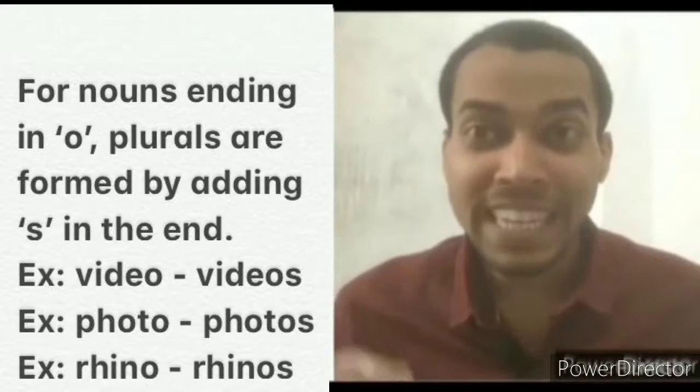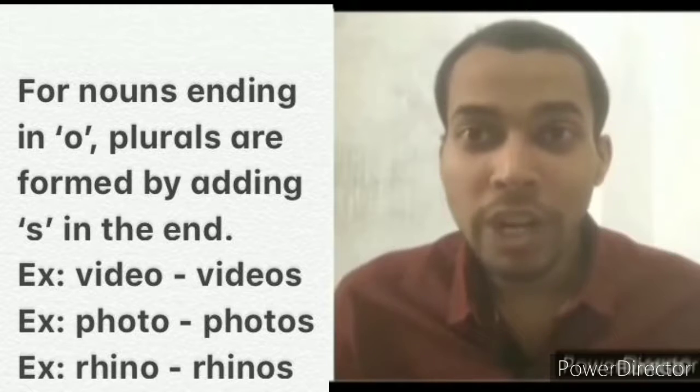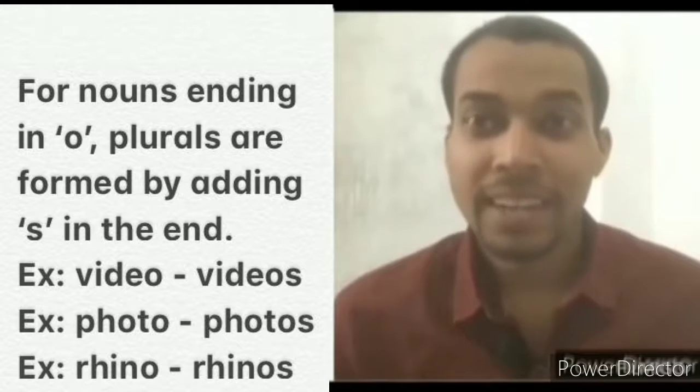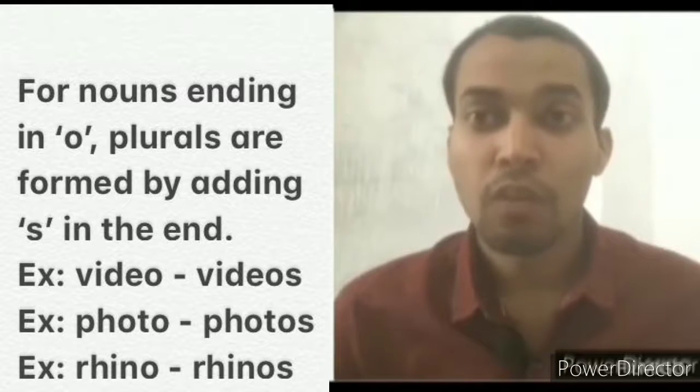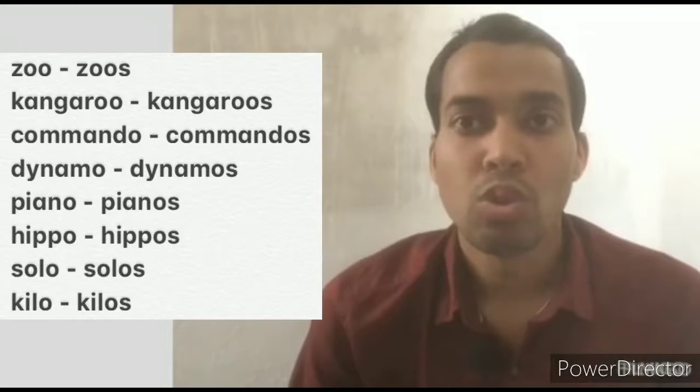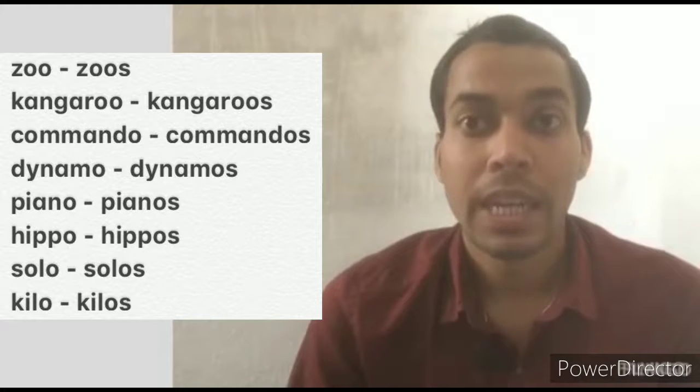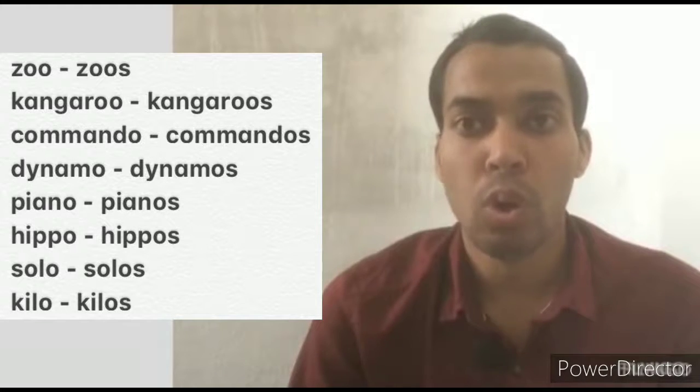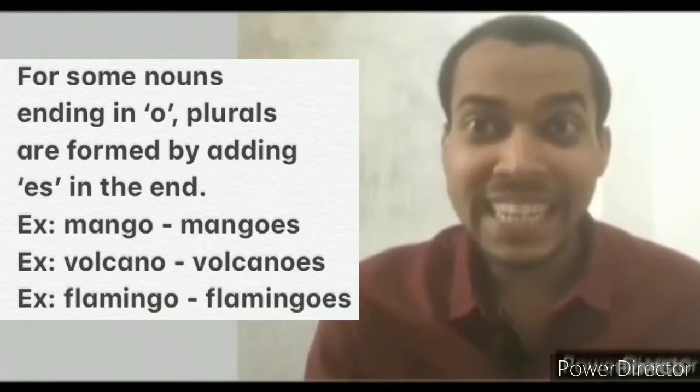For nouns ending in O, plurals are formed by adding S in the end. For example, video - videos, photo - photos, rhino - rhinos, zoo - zoos, kangaroo - kangaroos, commando - commandos, dynamo - dynamos, piano - pianos, hippo - hippos, solo - solos, kilo - kilos.